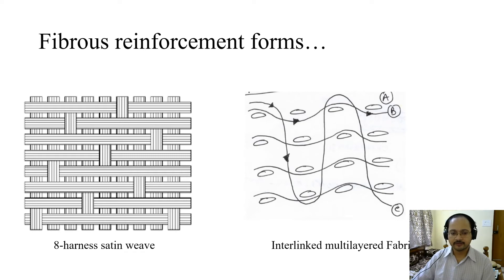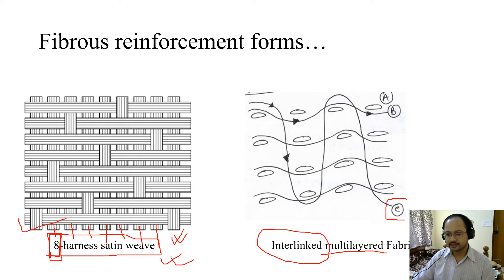Now coming to fibrous reinforcement forms: 8 harness satin weave. Why the number 8? At the 8th point, there is the crossover. Let's take this example. It's 1, 2, 3, 4, 5, 6, 7. At the 8th point, there is a crossover. So it's an 8 harness satin weave. Similarly, there could be interlinked multilayered fabric. What does it mean? Forget about the C yarn. Imagine there are two yarns, A and B, which make the plain weave. If you take another yarn and make it interlinked in the depth direction, that becomes multilayered. A is in the cross-sectional direction, B is in the longitudinal direction, and C is in the depth direction.